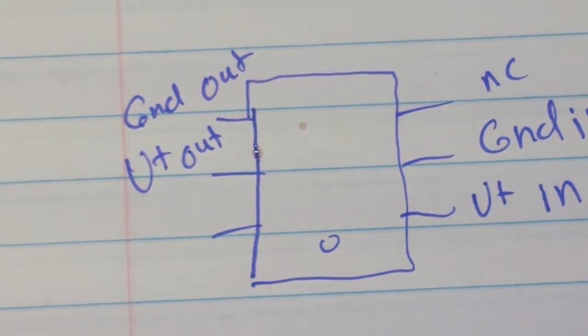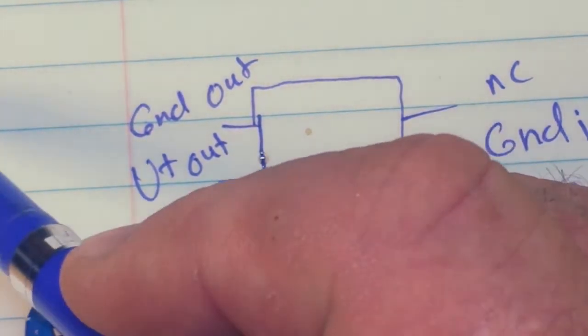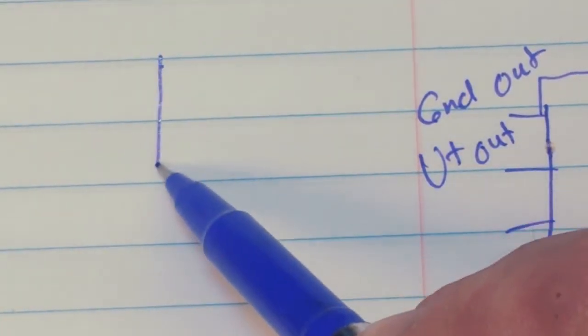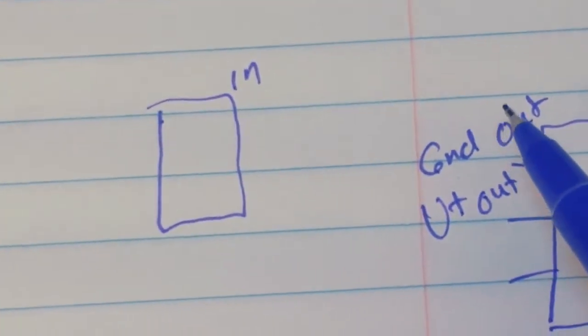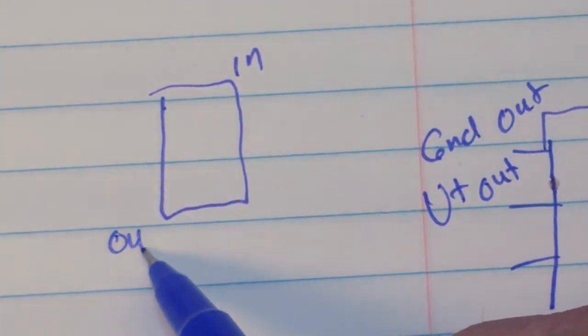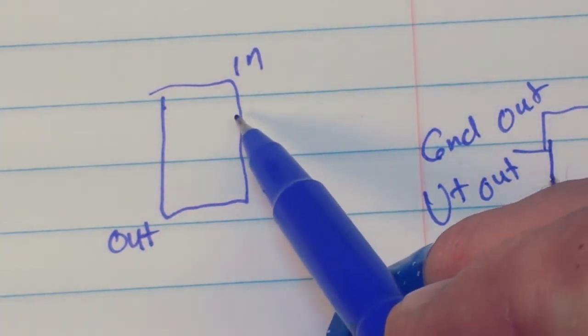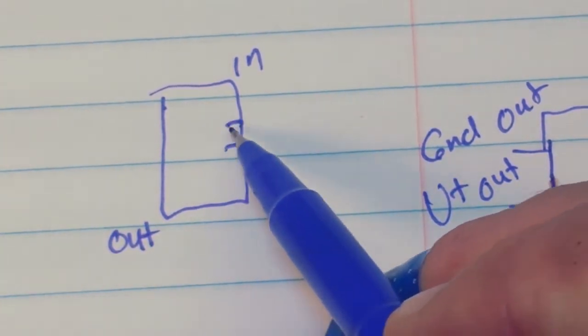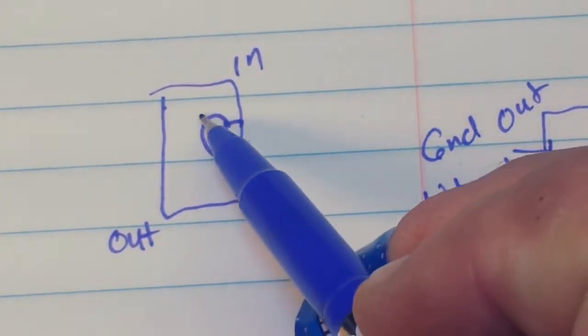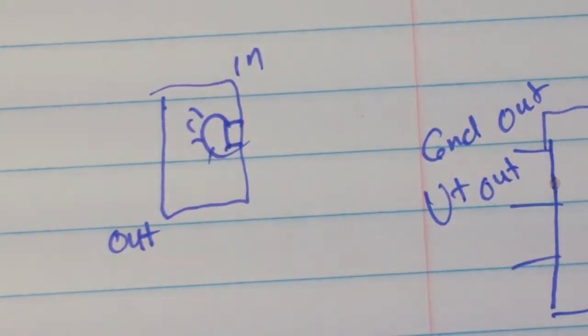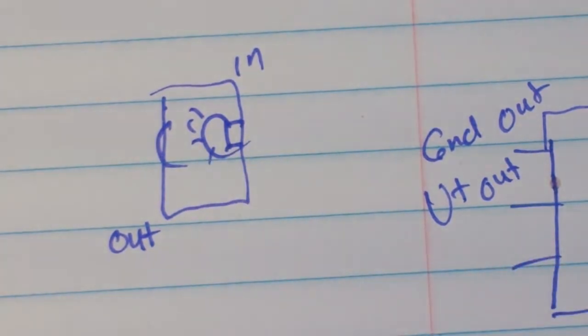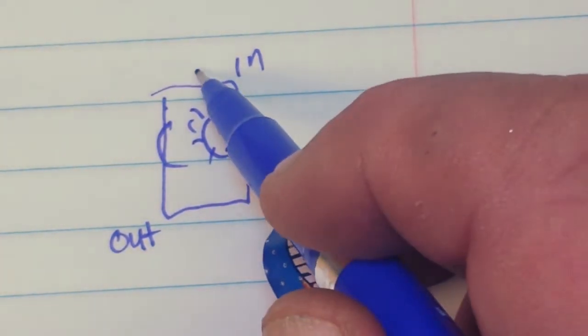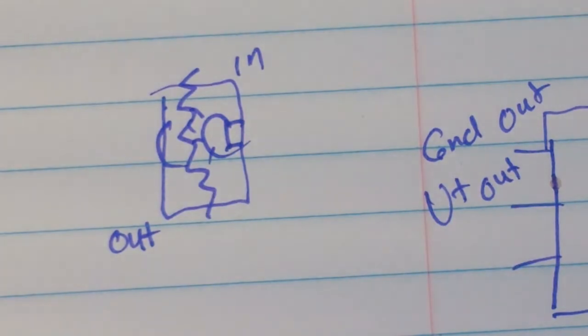The way the opto coupler works is if we take a look here and imagine the chip - this is our input side, this is our output side. On the input side is an infrared emitter, on the output side is an infrared receiver, and in between there is nothing.